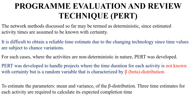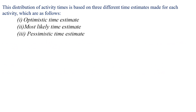Let us see what the three time estimates are. These three time estimates are: the optimistic time estimate, the most likely time estimate, and the pessimistic time estimate. Let us look at each one by one.